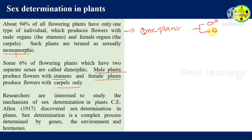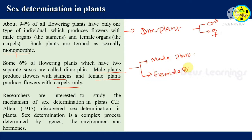So here we have staminate flowers and pistillate flowers. In the dimorphic case, there are two separate plants — a male plant that produces flowers with stamens, and a female plant with carpels.